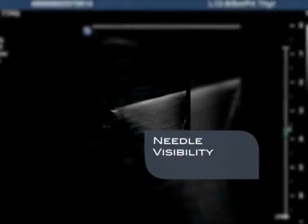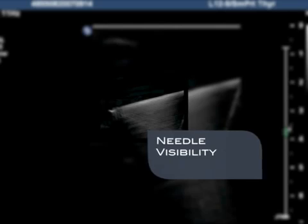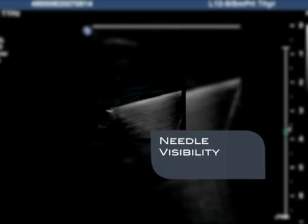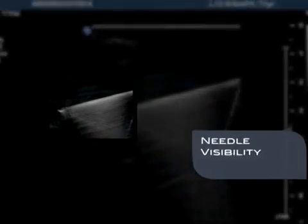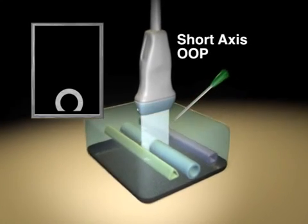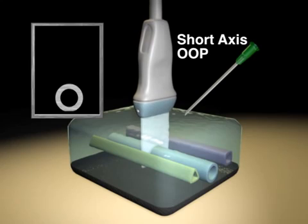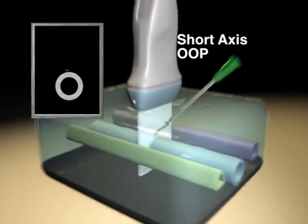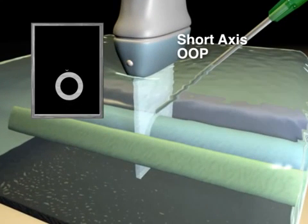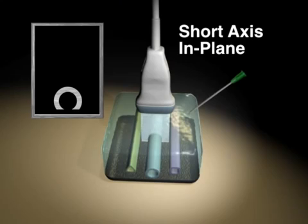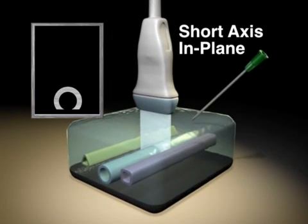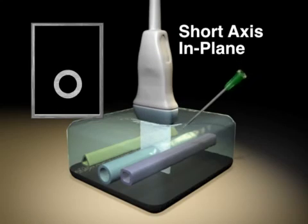Given that we are most interested in nerves imaged on short axis, we will now look at how the needle will be seen as it approaches nerves. With the out-of-plane needle approach, the needle starts in front of the plane of imaging and advances until it crosses the plane of imaging as an echogenic dot. With the in-plane needle approach, the needle is visualized on its long axis as it advances within the scan plane.